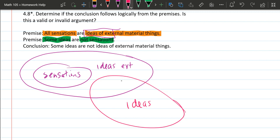So some ideas are going to be possibly ideas of external material things and some ideas may not be ideas of external material things. For example, maybe these are ideas of internal material things.